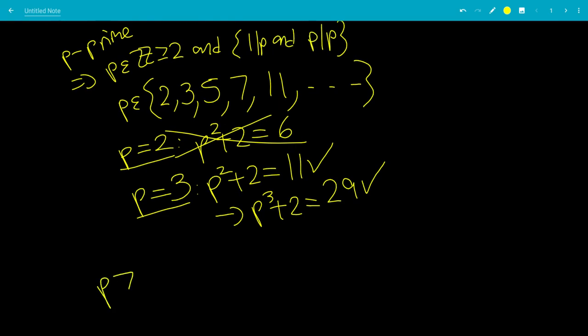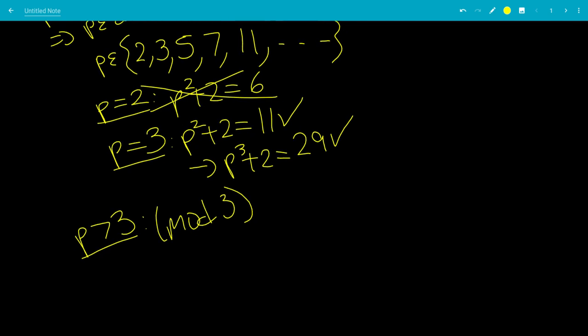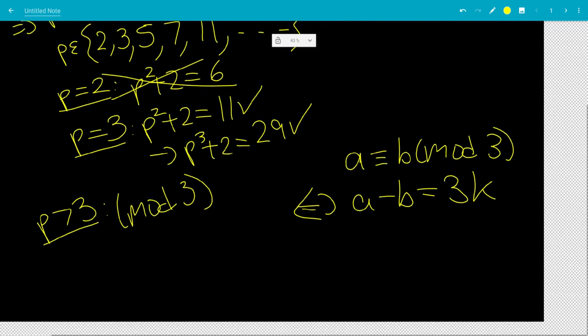So let's check p greater than 3. Now we're going to work in mod 3. We're basically going to show that every prime after 3, so 5, 7, 11, will give you a multiple of 3. So what does mod 3 mean? a is congruent to b mod n, but we're just going to say mod 3, if a minus b equals a multiple of 3. So 3 times k, where k is an integer.